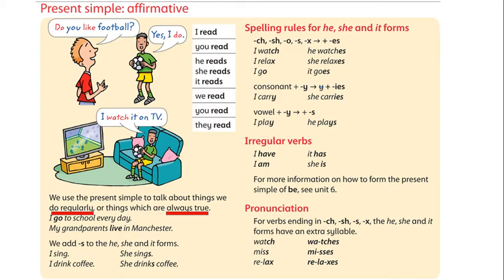There are also irregular verbs. For example: I have, it has. I am, she is. These are irregular verbs. And remember — when we have words ending with CH, SH, S, or X, we will have an extra syllable. For example: watch with ES becomes 'watches'. Miss becomes 'misses'. Relax becomes 'relaxes'.